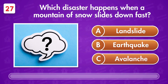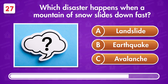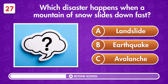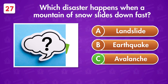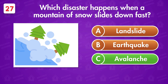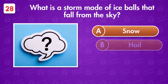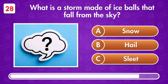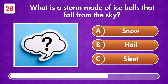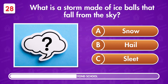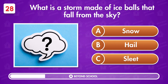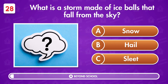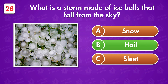Which disaster happens when a mountain of snow slides down fast? It's an avalanche. What is a storm made of ice balls that fall from the sky? That's hail.